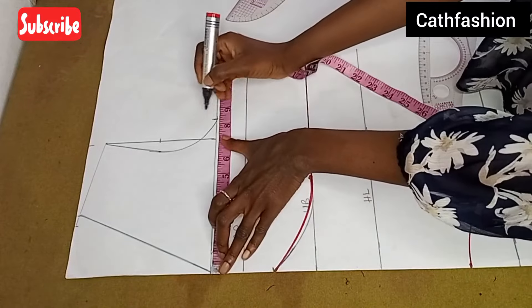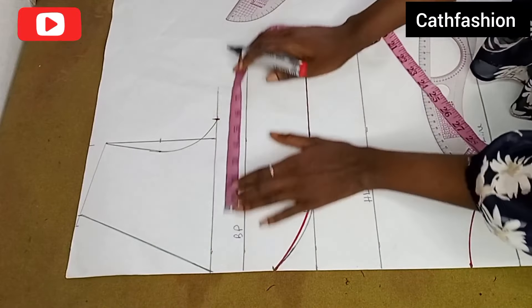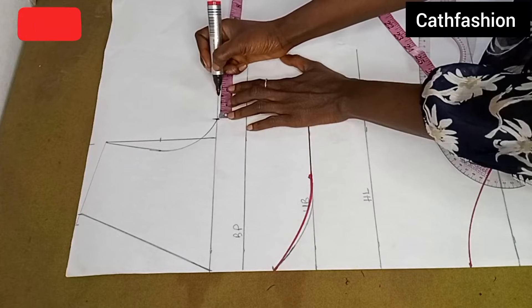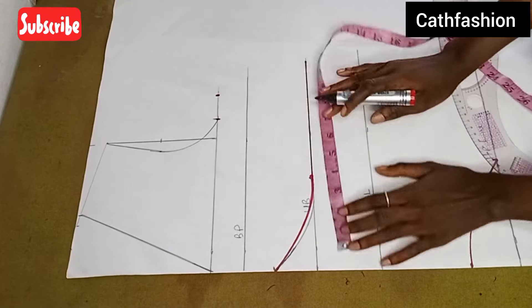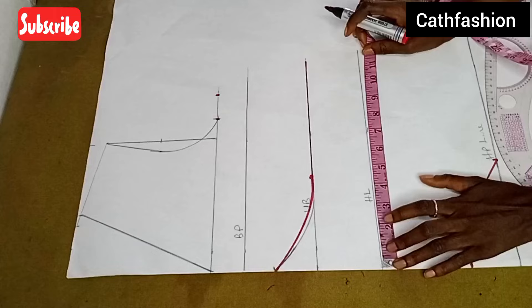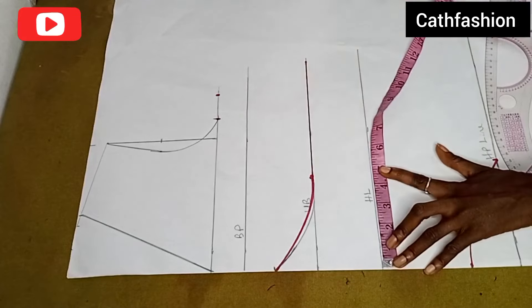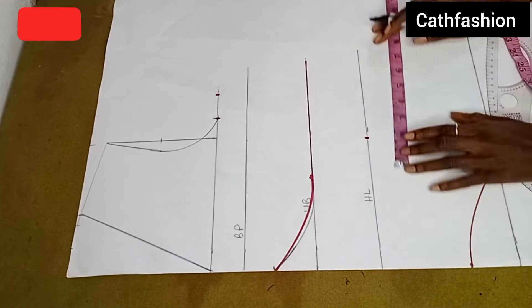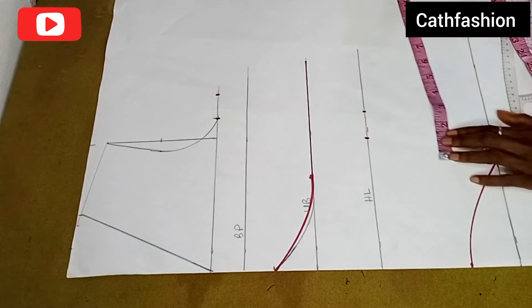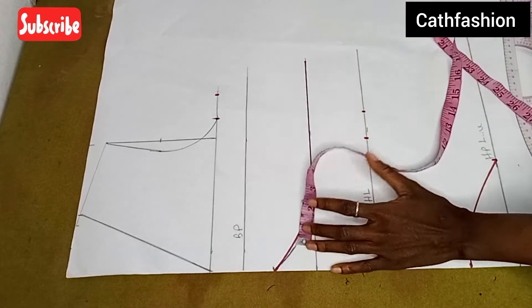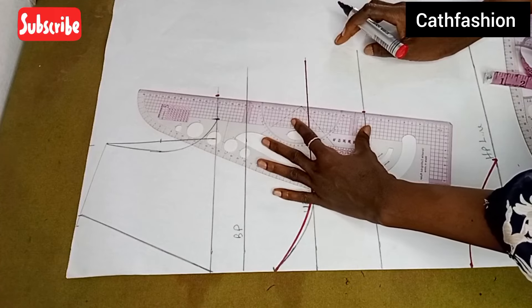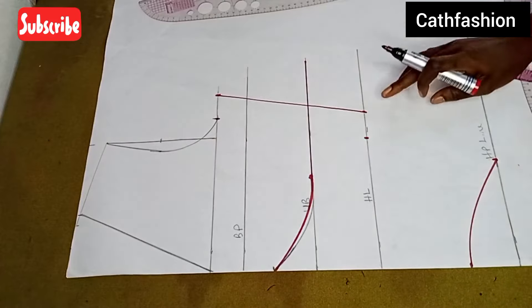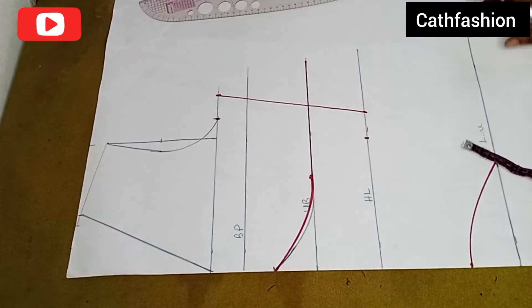Now I'm going to add my side seam allowance which is 1.5 inches. I'll divide my hip measurement by 4 — what I have is 6.5 — so I'll mark 6.5 then add 1.5. This dress doesn't need ease, so we are going to ignore that.